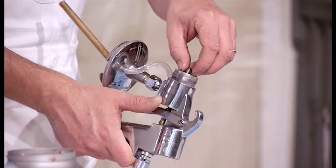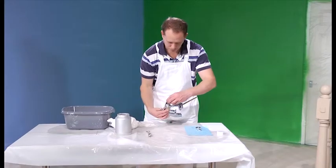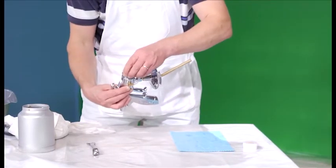Screw the fluid tip in place. Gently tighten with a spanner. Place the directional plate on top of the fluid tip. Finally, screw on the air cap.